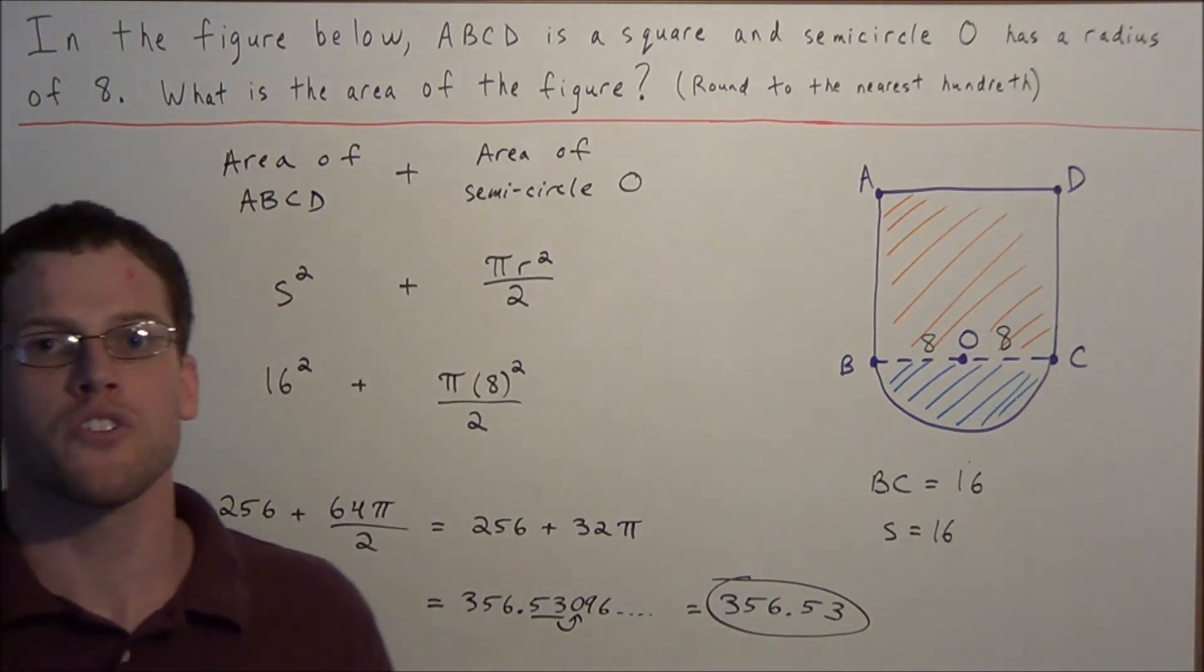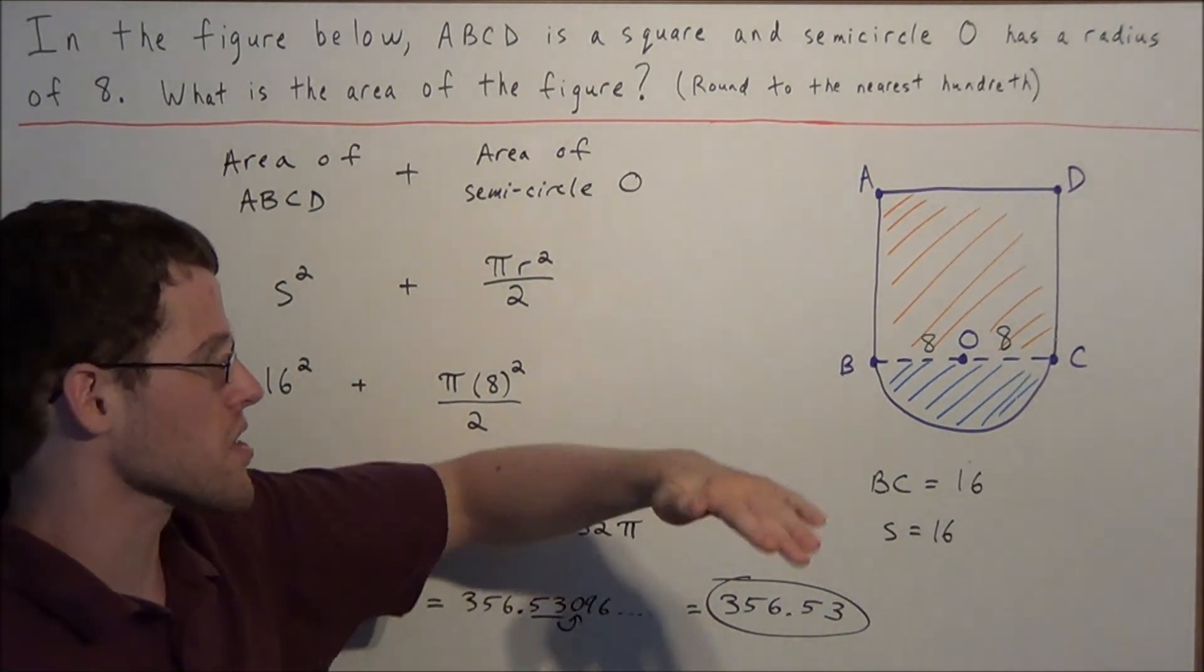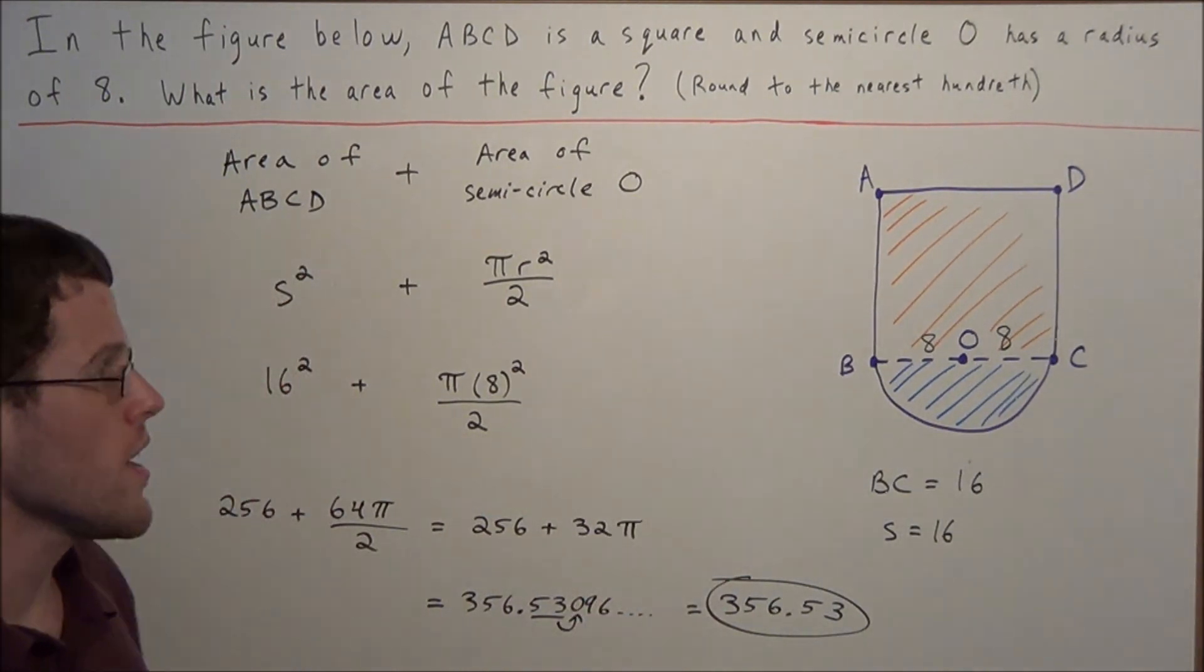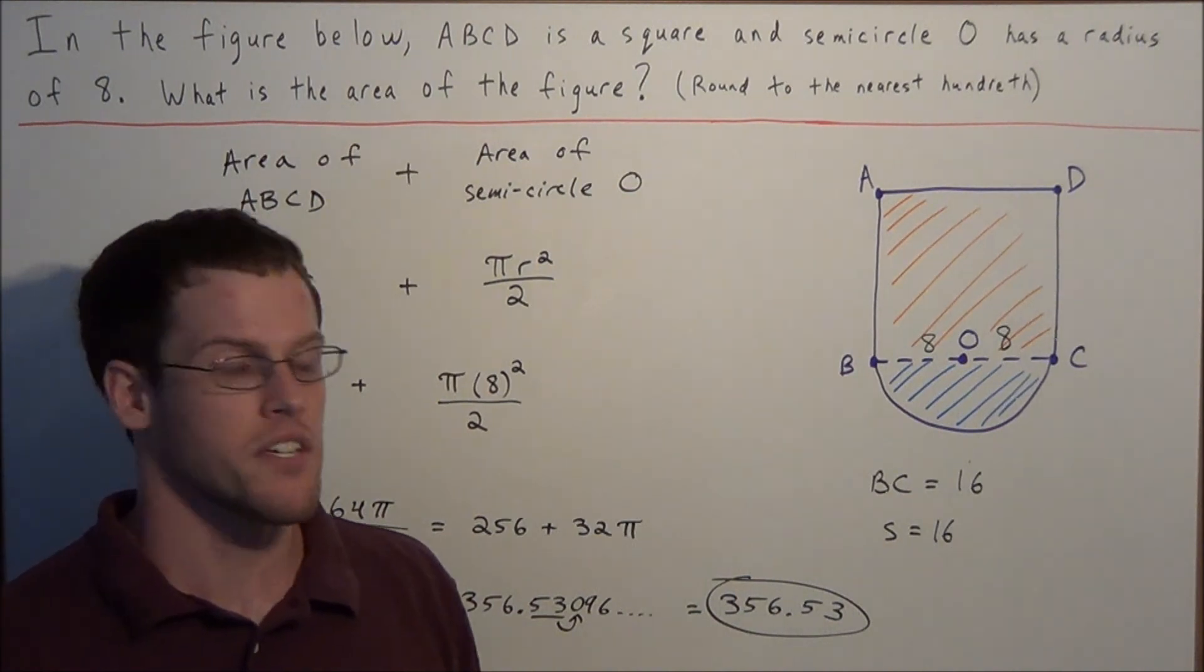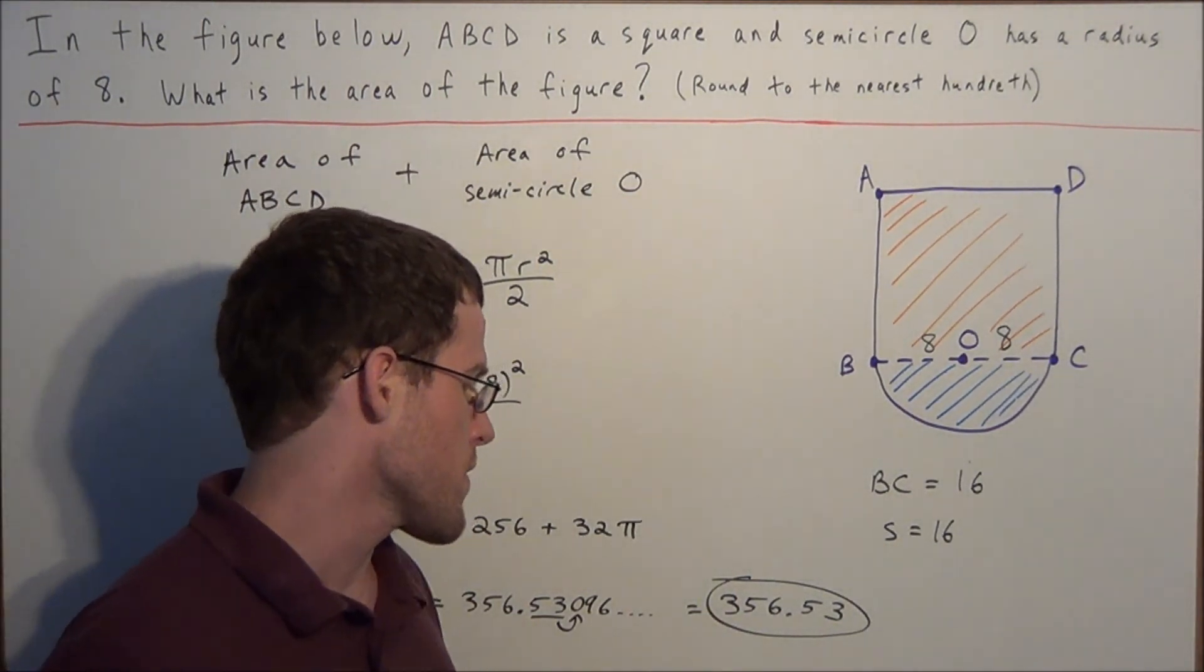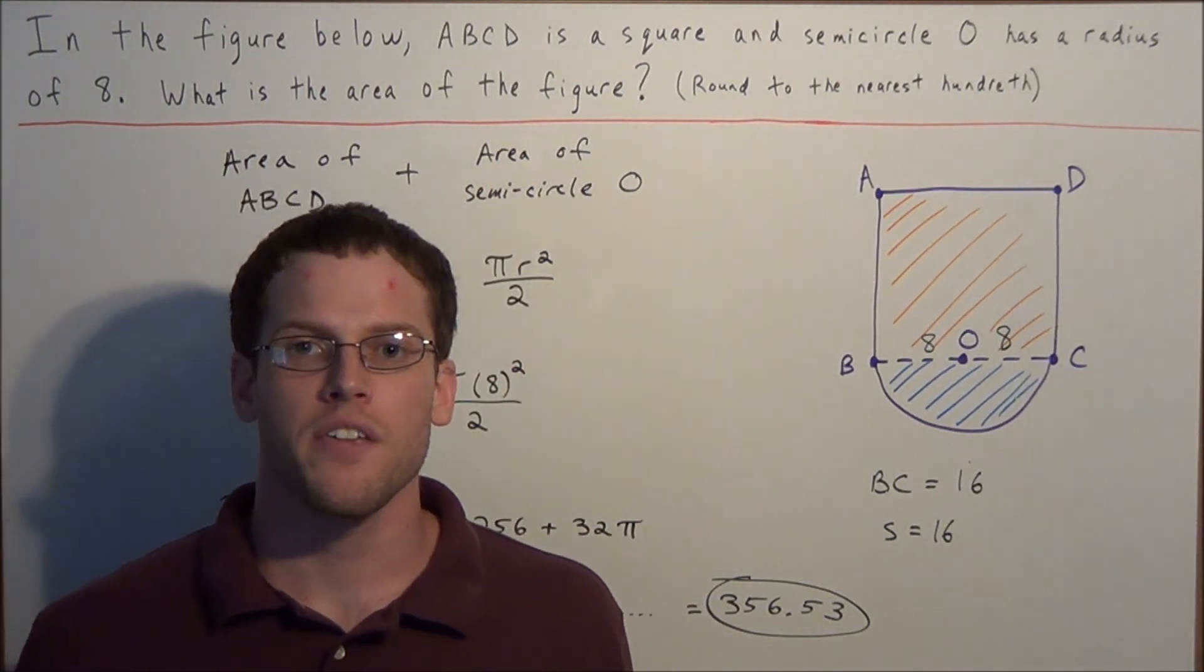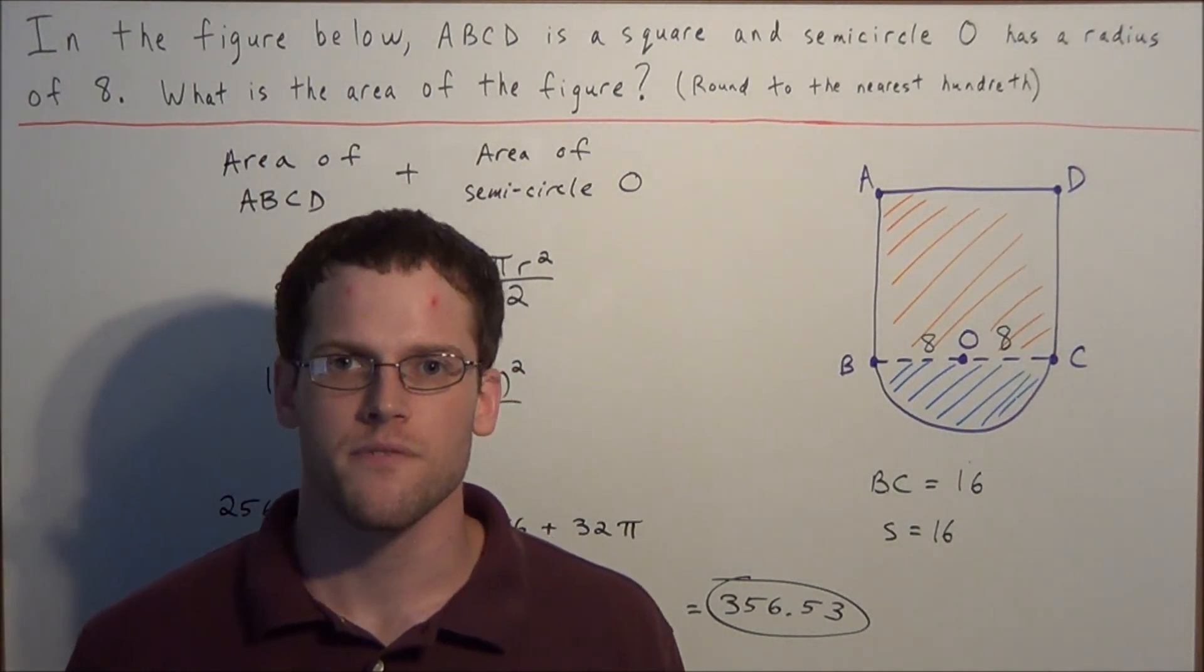So just remember, in general, when you're trying to find the area of an irregular shape, the goal is to cut it into shapes that you do know how to find the area of, and then add the area of the individual shapes together to find the area of the entire shape. So we have our answer is 356.53. Well this is going to conclude this video on finding the area of irregular shapes. Thank you all for watching, and I hope that this was helpful.